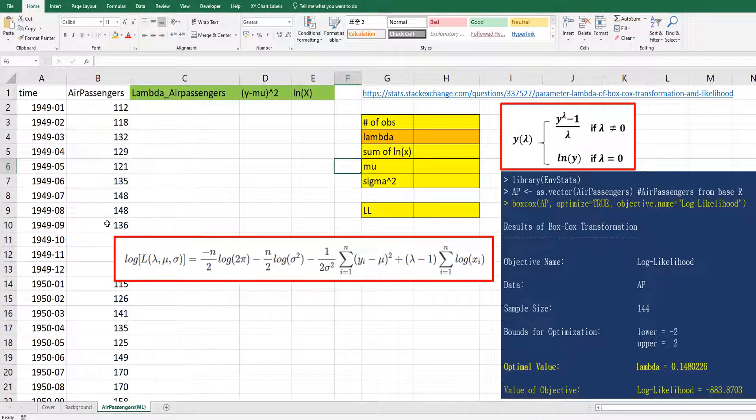I have prepared air passenger data from stats base library in R. If you use Box-Cox function from MASS library, then you can get optimal lambda by maximum likelihood method. Let me show you how to get this optimal lambda in Excel.